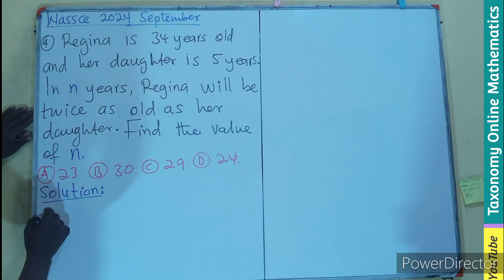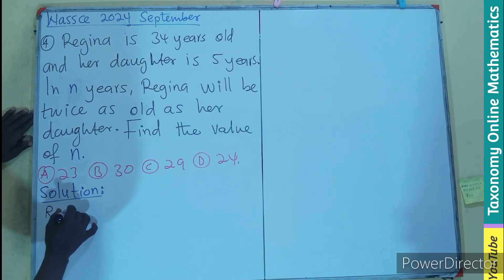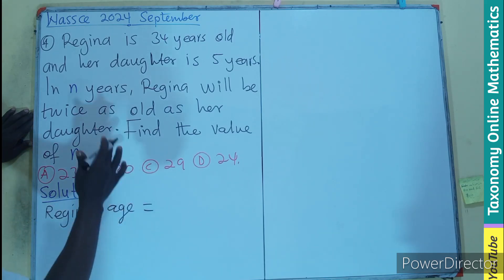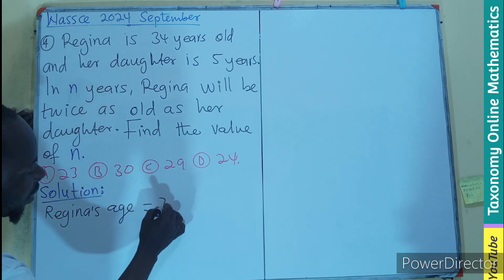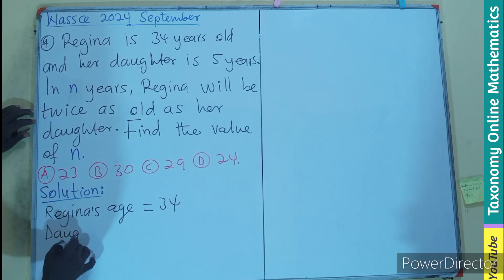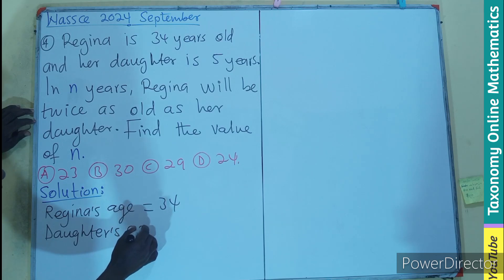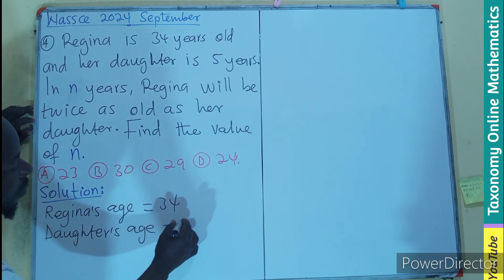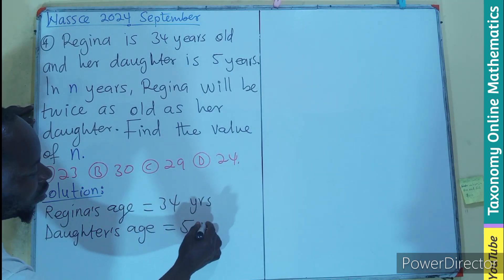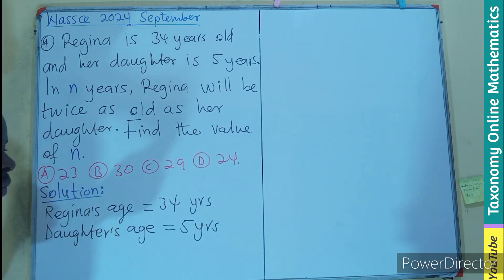Regina's current age is 34 years, and the daughter's current age is five years. Let's add the years as a unit of measurement, so these are their ages now.